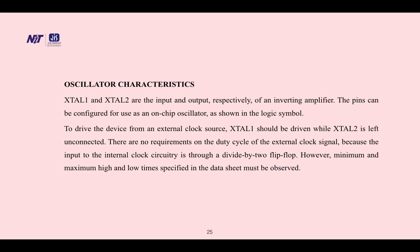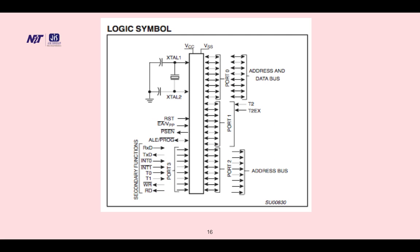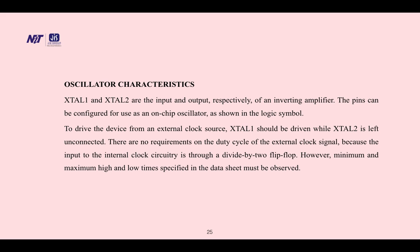Oscillator characteristics: XTAL1 and XTAL2 are the input and output, respectively, of an inverting amplifier. The pins can be configured for use as an on-chip oscillator as shown in the logic symbol to drive the device from an external clock source. XTAL1 should be driven while XTAL2 is left unconnected. There are no requirements on the duty cycle of the external clock signal because the input to the internal clock circuitry is through a divide-by-2 flip-flop. However, minimum and maximum high and low times specified in the datasheet must be observed.